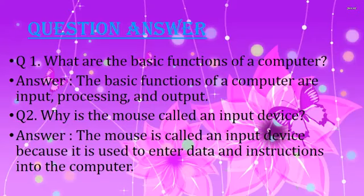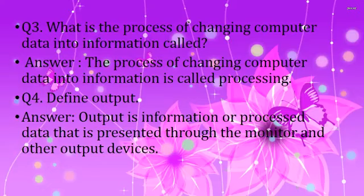Question No. 1: What are the basic functions of a computer? Answer: The basic functions of a computer are input, processing and output. Question No. 2: Why is the mouse called an input device? Answer: The mouse is called an input device because it is used to enter data and instructions into the computer. Question No. 3: What is the process of changing computer data into information called? Answer: The process of changing computer data into information is called processing. Question No. 4: Define Output. Answer: Output is information or processed data that is presented through the monitor and other output devices.